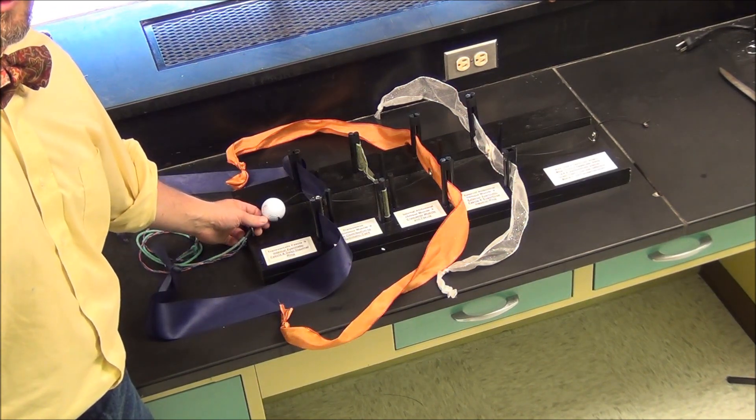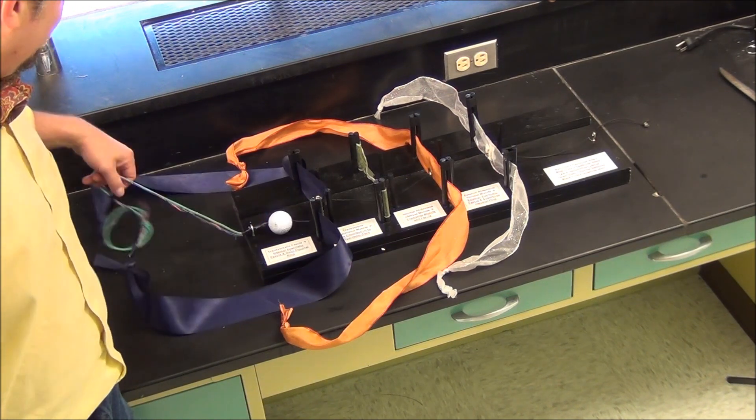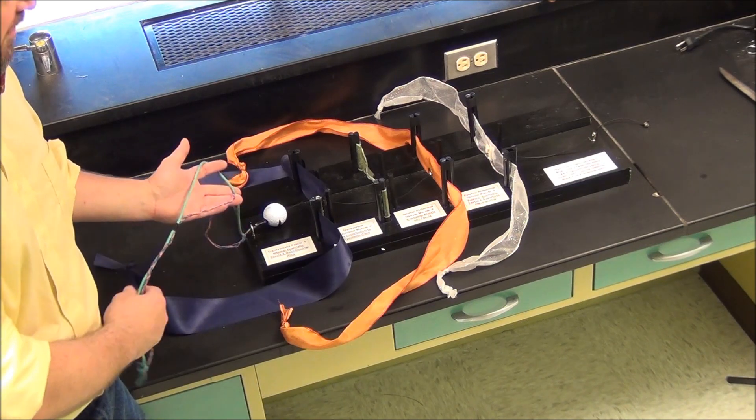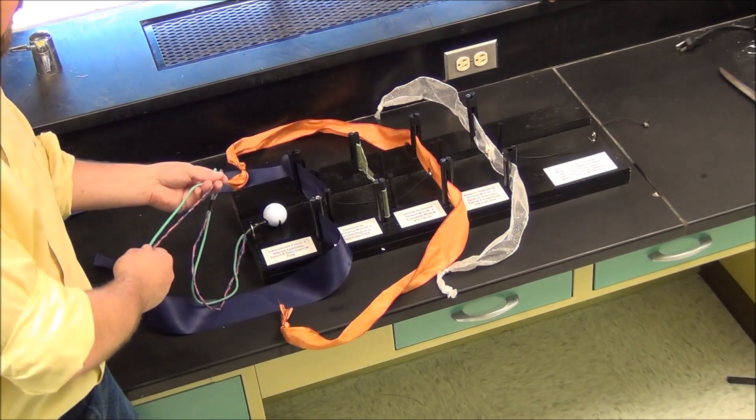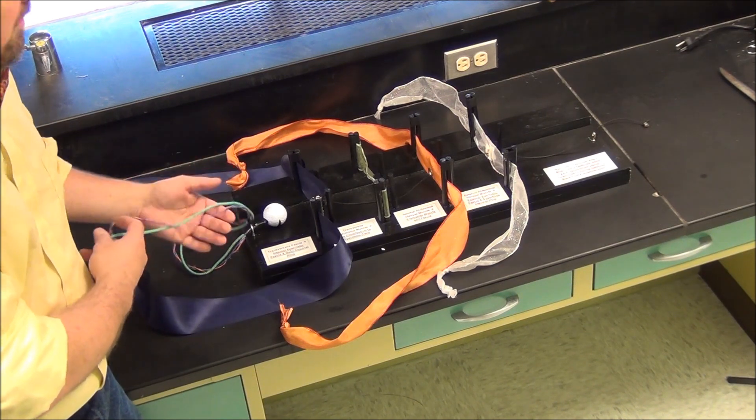Right here is a golf ball. The golf ball is going to be standing in for the testes. Trailing out behind it, we've got the green cord that's going to represent the ductus deferens, aka vas deferens, as well as a red and blue series of cords representing the testicular artery and vein respectively.